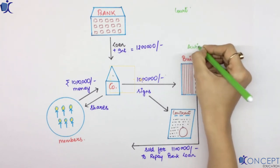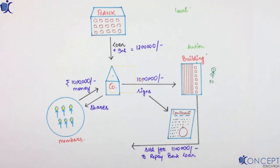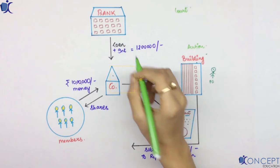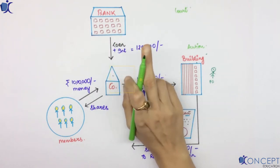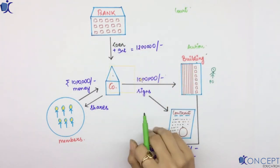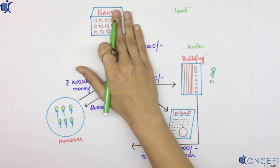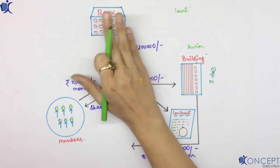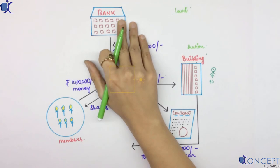Auction. Building auction. 11 lakh rupees received. Please remember, how much was the bank loan? It was 12 lakh rupees. How much money came from building? 11 lakh rupees. The bank received 11 lakh rupees. Did the bank loan liability finish? No, still 1 lakh rupees remains.